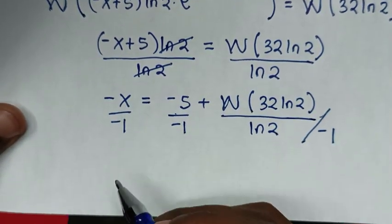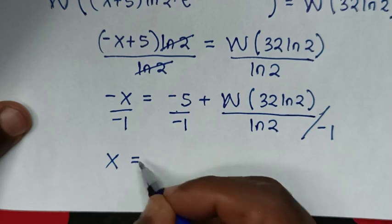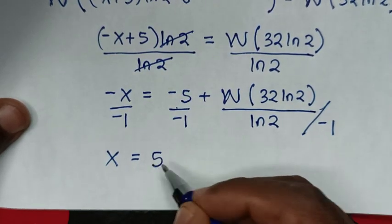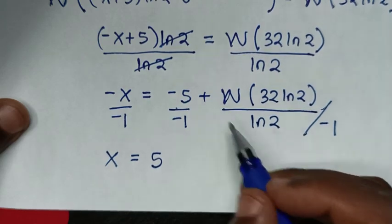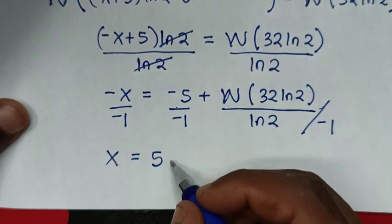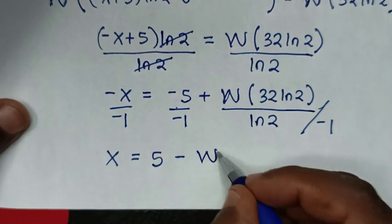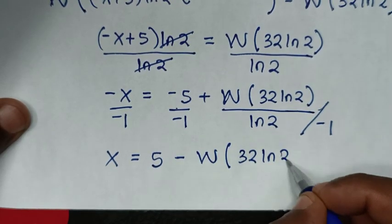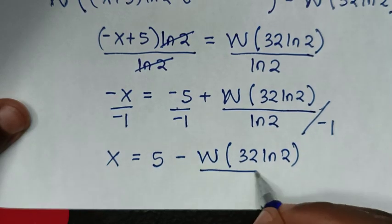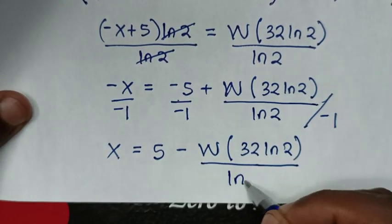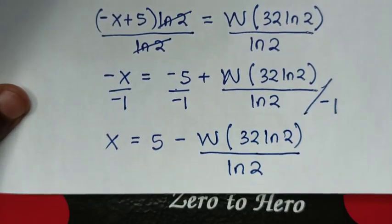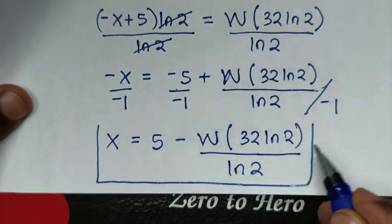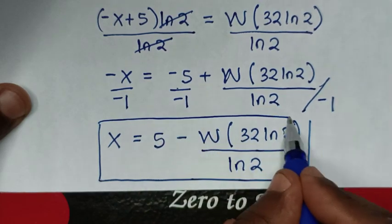Dividing both sides by negative 1, negative x over negative 1 gives x. Negative 5 over negative 1 gives 5, and the sign of the W term flips. Therefore the final answer is x equals 5 minus W(32·ln2) over ln2.